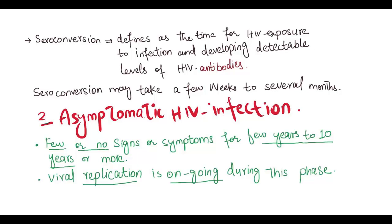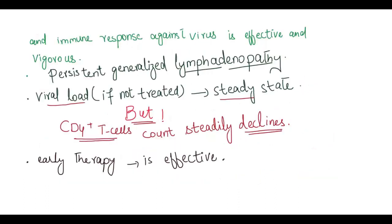Asymptomatic HIV infection: At this stage, infected persons exhibit few or no signs or symptoms for a few years to 10 years or more. Viral replication is ongoing and immune response against the virus is effective and vigorous. Persistent generalized lymphadenopathy is an outcome in some patients. During this phase, viral load, if not treated, tends to persist at a relatively steady state, but CD4 T cell count steadily declines. Early initiation of therapy in the asymptomatic period is effective.